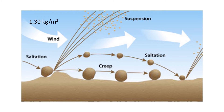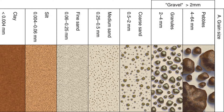Much higher velocities are required for wind to move sediments because of the low density of air. Air has a density of 1.3 kilograms per cubic meter. At 30 meters per second — the average strength of a strong wind over land — it is only capable of moving a quartz grain at most half a millimeter in diameter. Wind is the main agent of erosion in the desert, though it is much less effective than water.